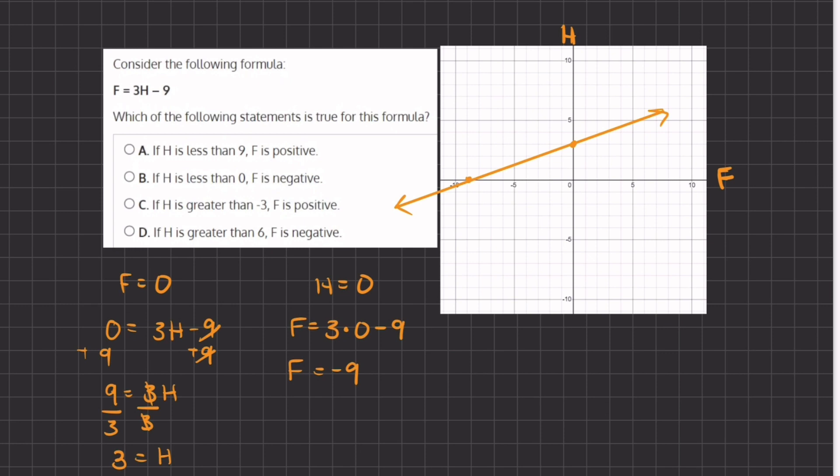A states if h is less than nine, so nine is right over here and it is less than nine, they're saying that f is positive. Now f is positive once h reaches this three, but before then all of the f values will be negative. So this statement is half correct because when h is less than nine it is also negative and then it will become positive, so A is incorrect.